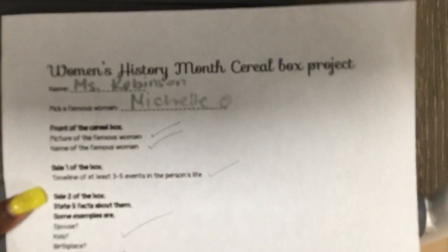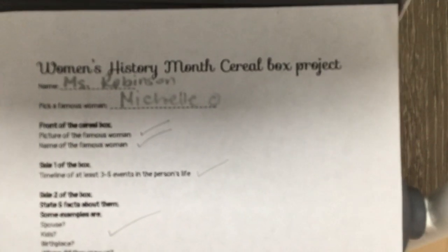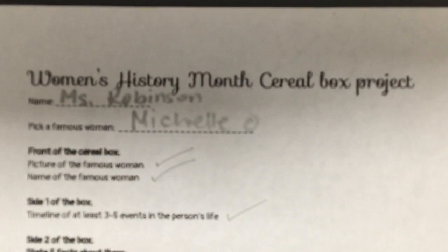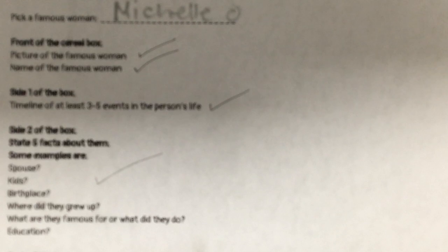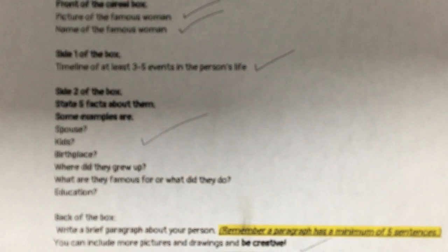Side number one of your cereal box — pick either side. You need to create a timeline with three to five events. Three is the minimum, and I think maybe only five events will be able to fit on the side of your cereal box. Three to five events in that person's life — it could be their birth, when they graduated from school, when they won awards, or when they got married. Pick things that are significant to this person and why they were chosen as a famous lady in history.